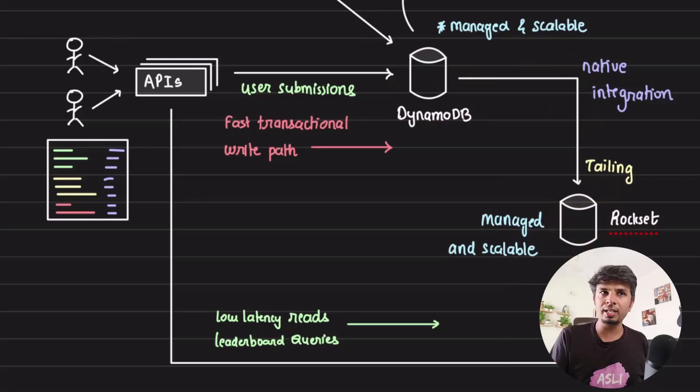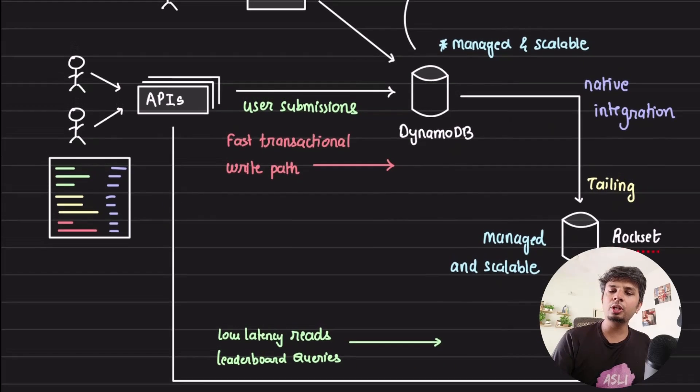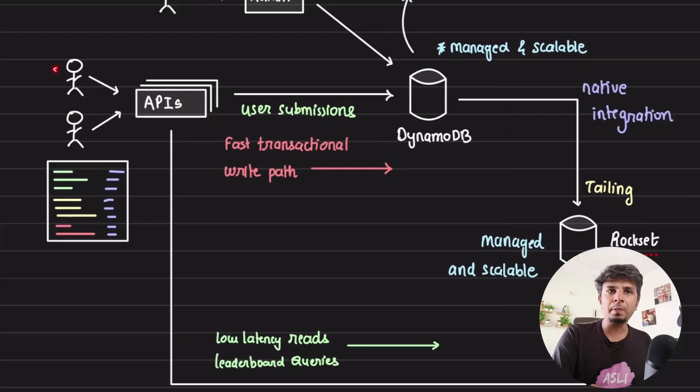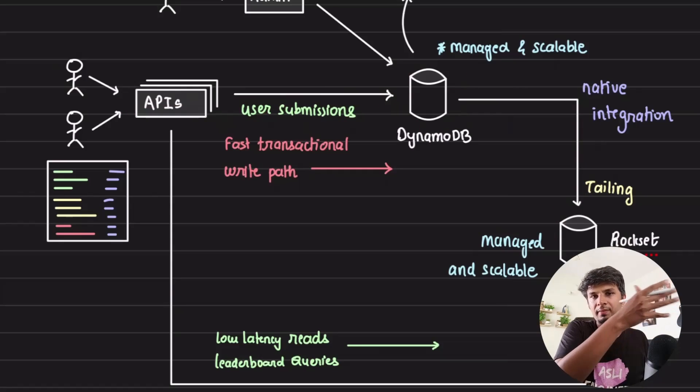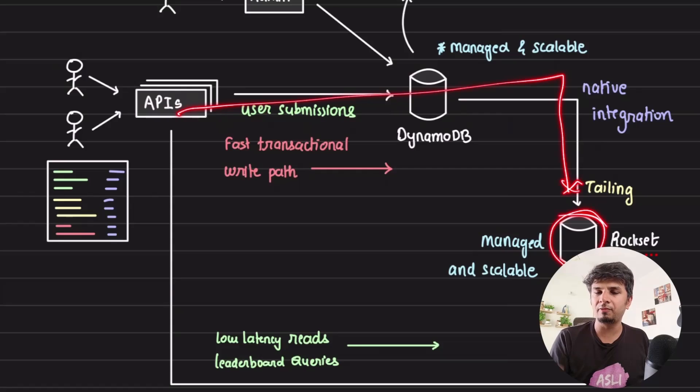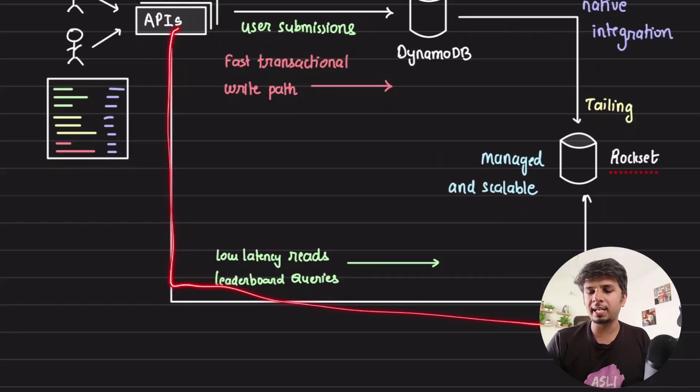Because Rockset offers very low latency, all of your leaderboard queries will be powered through Rockset. You can clearly see the read path and the write path. The write path is when user is doing an activity, it gets stored in DynamoDB, from DynamoDB it's tailed and goes to Rockset. In Rockset, your data is immediately available for query. On the read side, because Rockset is great with aggregations and joins across multiple parameters with very low latency, all of your leaderboard queries can be fired through Rockset.